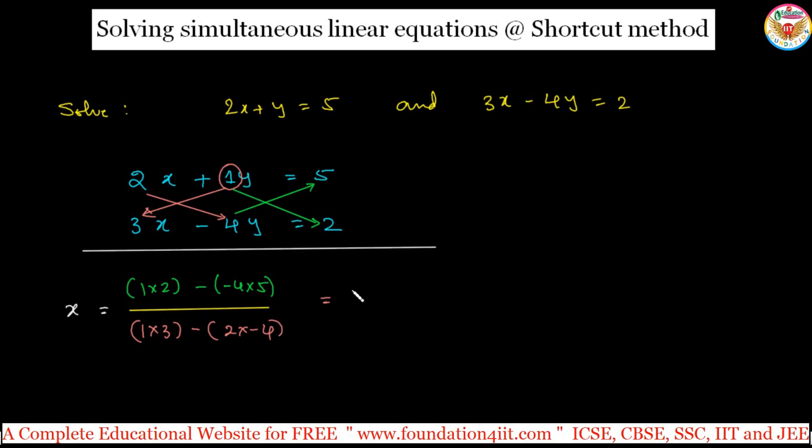So 1 into 2 is 2 minus minus 4 into 5 is minus 20, all the minus is plus 20, divided by this is 3 minus into minus plus 2, 4 is 8. That is 22 by 11, the answer is 2. x value got 2.